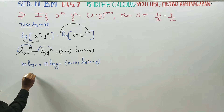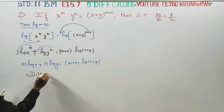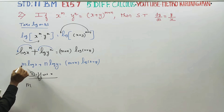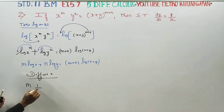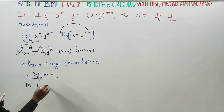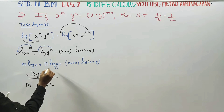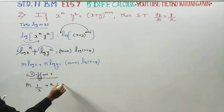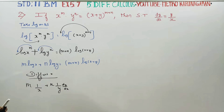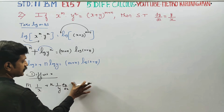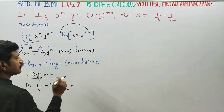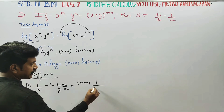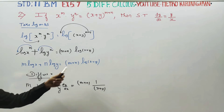Now differentiation starts. Differentiate with respect to x. m is a number, so differentiate log x to get 1 by x. n is a number, differentiate log y to get 1 by y, and by the chain rule we multiply by dy by dx.